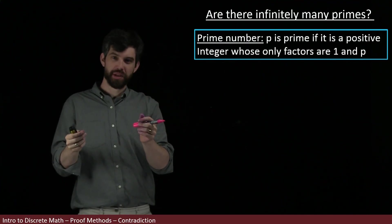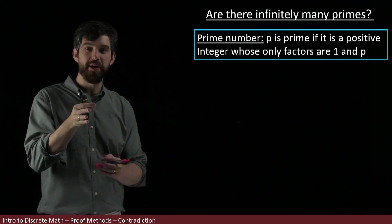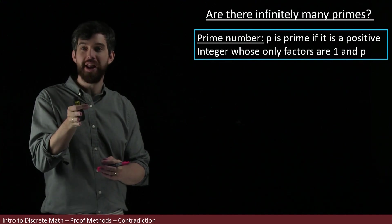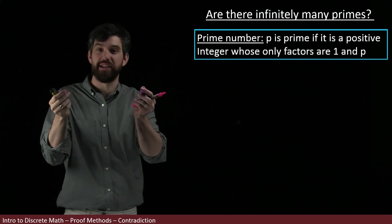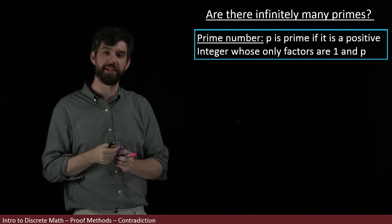Note that one is not called prime because it has one and itself, but those are not distinct things. So two distinct factors: one and itself.